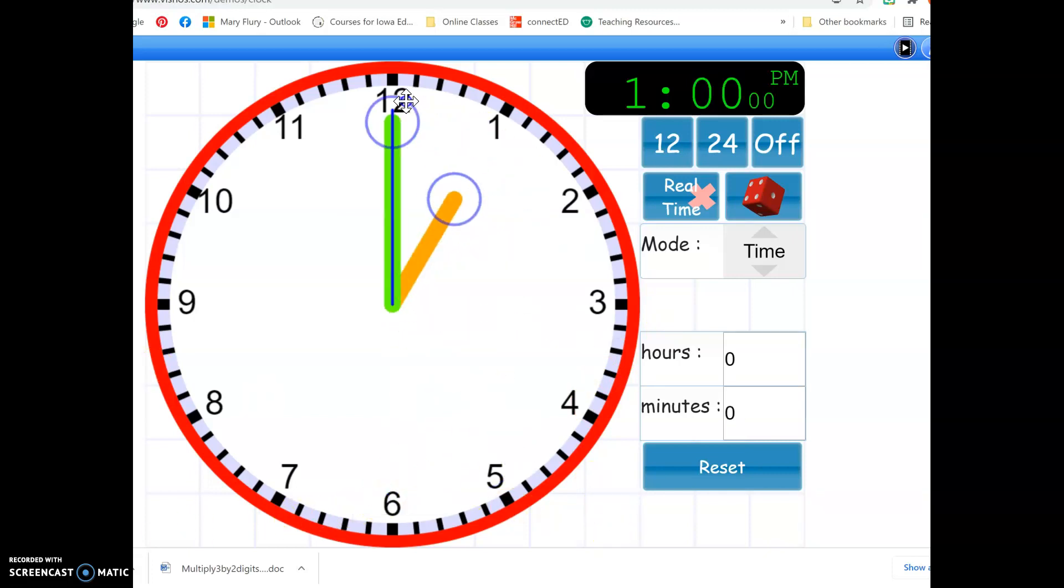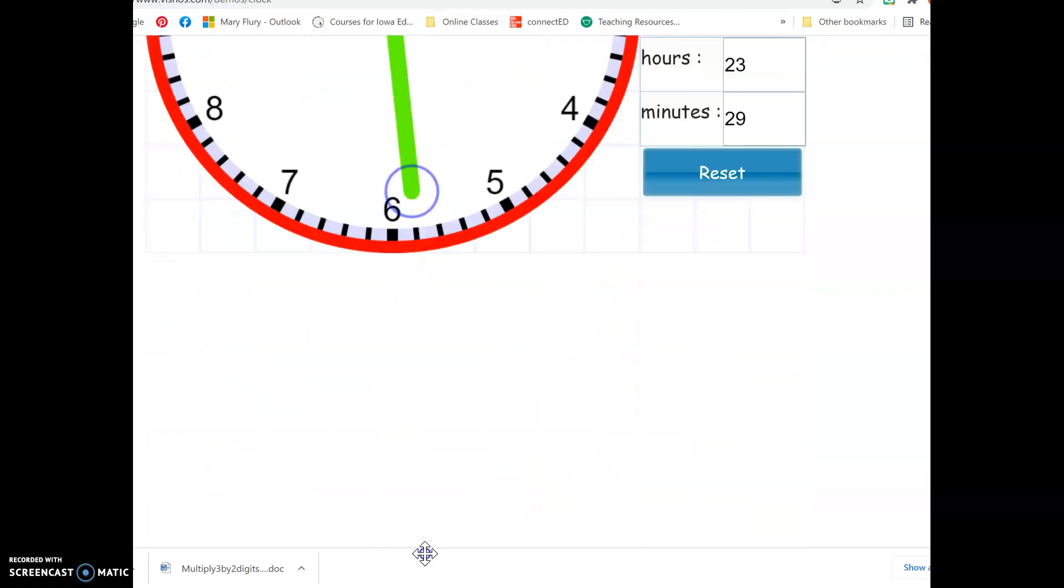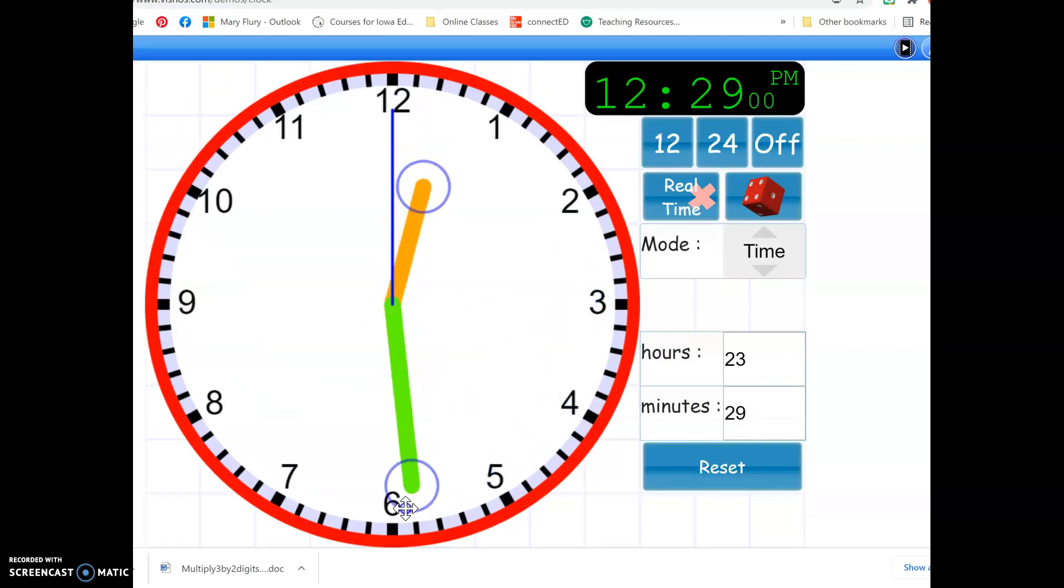What would the time be if it is 30 minutes before one o'clock? Well, I can count backwards by fives until I get to 30: 5, 10, 15, 20, 25, 30. So it would be 12:30.